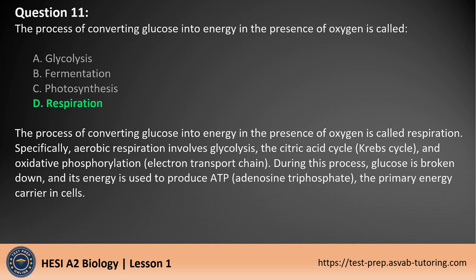The answer is D. The process of converting glucose into energy in the presence of oxygen is called respiration. Specifically, aerobic respiration involves glycolysis, the citric acid cycle (Krebs cycle), and oxidative phosphorylation (electron transport chain). During this process, glucose is broken down and its energy is used to produce ATP (adenosine triphosphate), the primary energy carrier in cells.